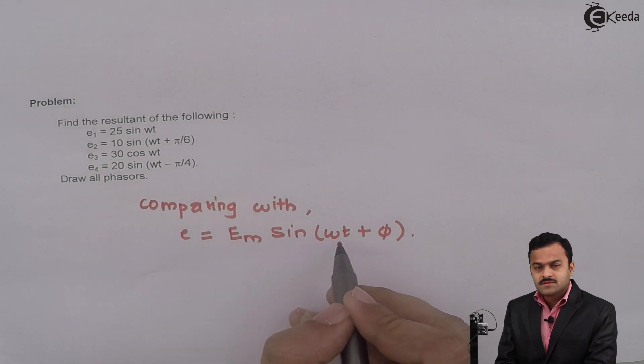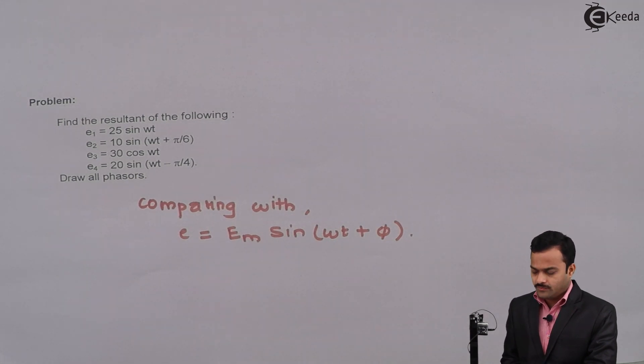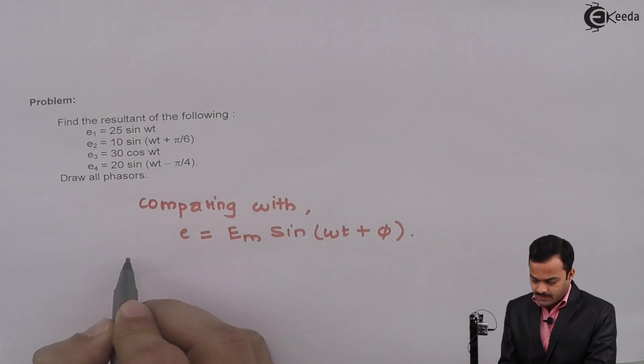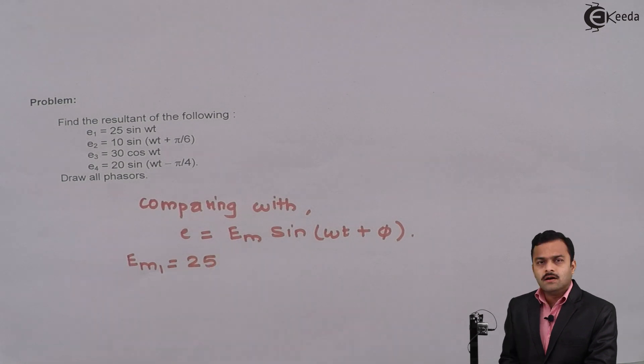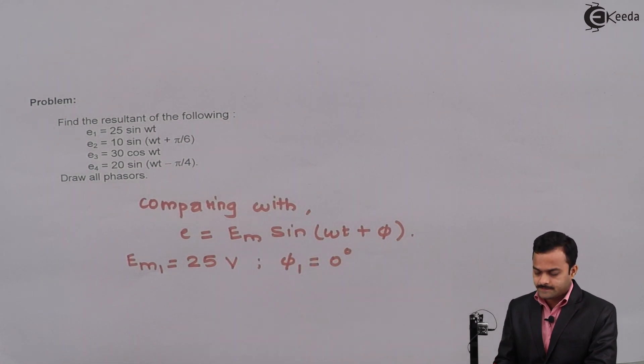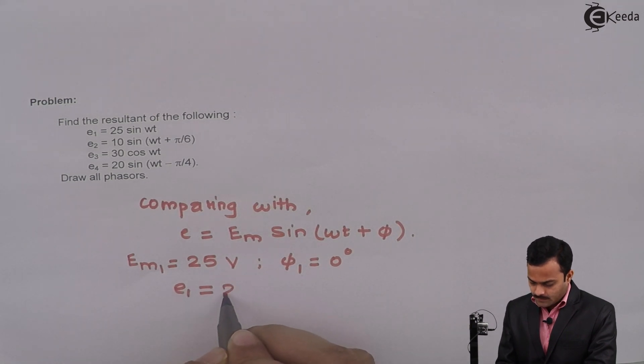So if I compare the first equation, I will get Em1 = 25 and φ1 is 0 degrees. So I can say E1 can be represented as 25 at an angle 0 degrees volt. So what I have done: from the equation I got a phasor form.